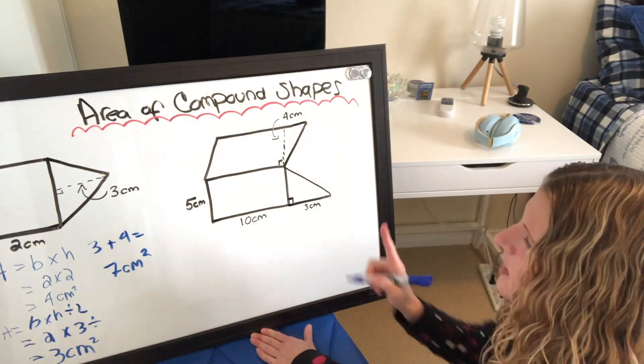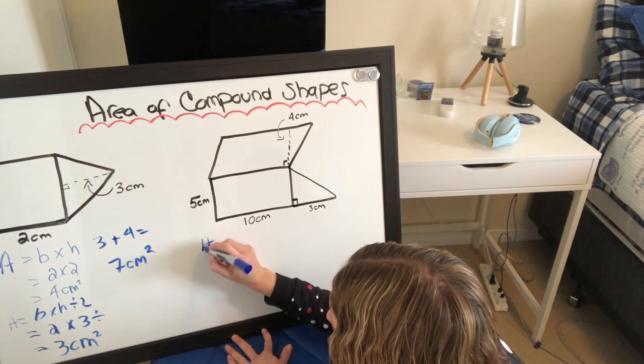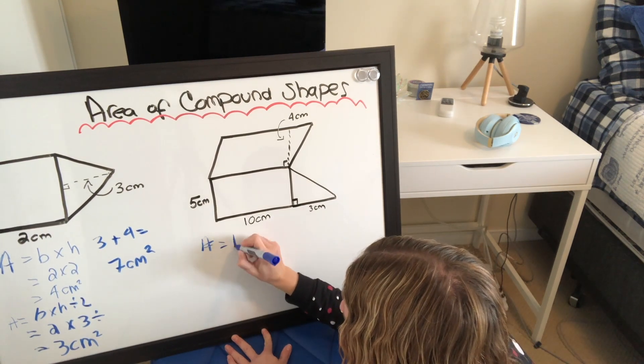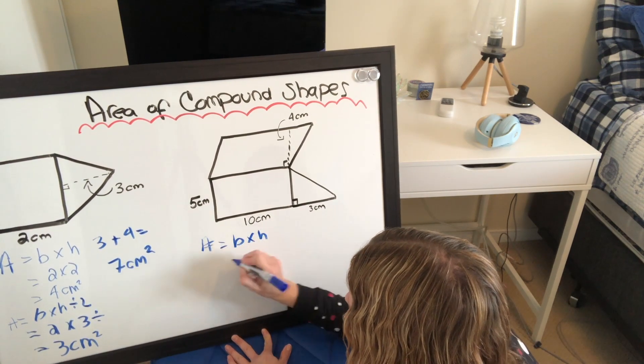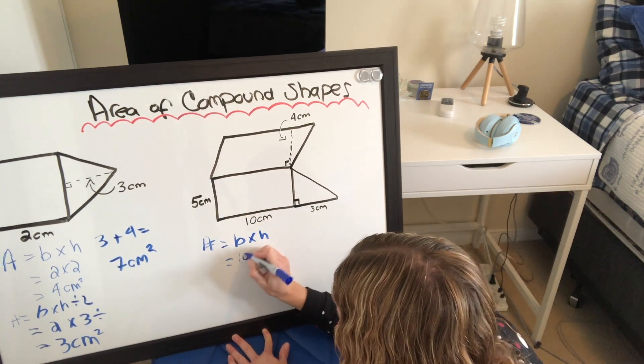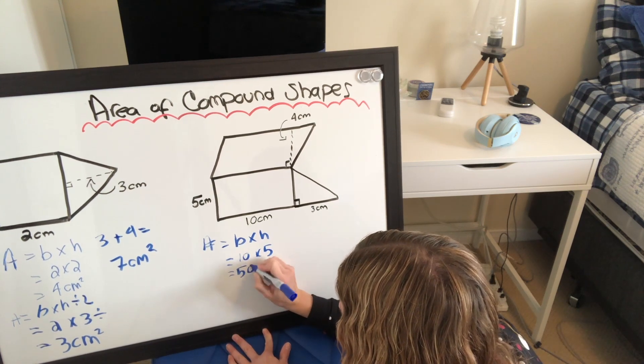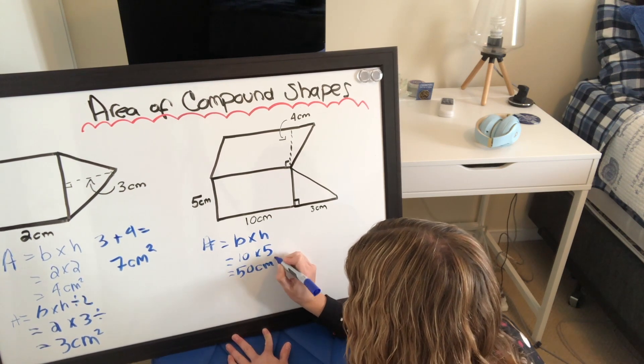So let's do the rectangle first because rectangles are easy. So area equals base times height. So we've got 10 centimeters times 5 centimeters. 10 times 5 equals 50 centimeters squared.